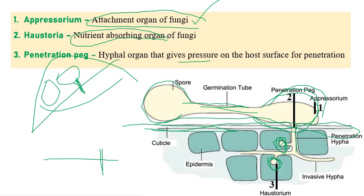Haustoria actually starts to penetrate inside the cells. There are epidermal cells, both intercellular and intracellular. The penetration peg goes intercellular, whereas when it comes to haustoria, it goes intracellular — inside the cell. This is inside the cell, and we know that a plant cell is a eukaryote containing ribosomes, cytoplasm, nucleus, DNA, and everything in each single cell.